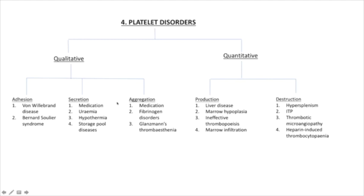Thrombocytopenia, which is a quantitative platelet disorder, can occur as a result of decreased production or increased platelet destruction — think of it as a production or destruction problem. The immature platelet fraction may be helpful in determining the cause: if it is low or normal, this suggests decreased platelet production; if it is elevated, this suggests increased destruction.